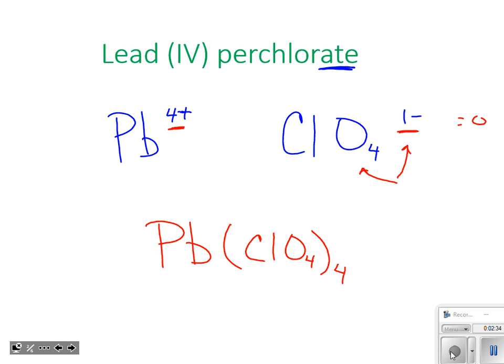Now what are some common things that I see wrong with this? Well one of the big ones is people don't put parentheses, so they put ClO4 and they say four of them. Ladies and gentlemen, to me that looks like I have 44 oxygens, which is not the case. So we definitely need parentheses there.